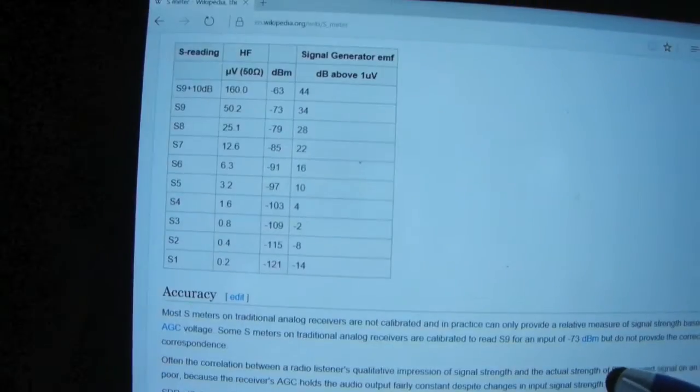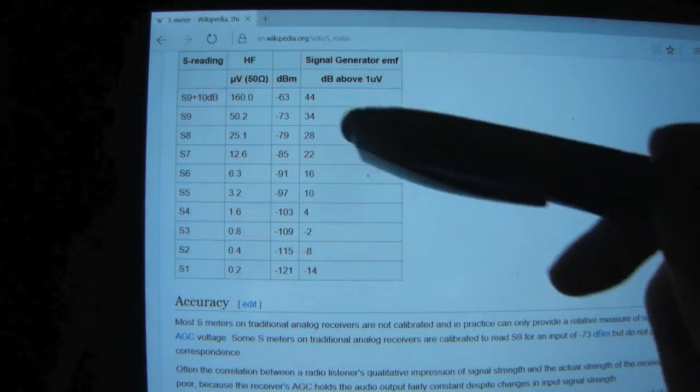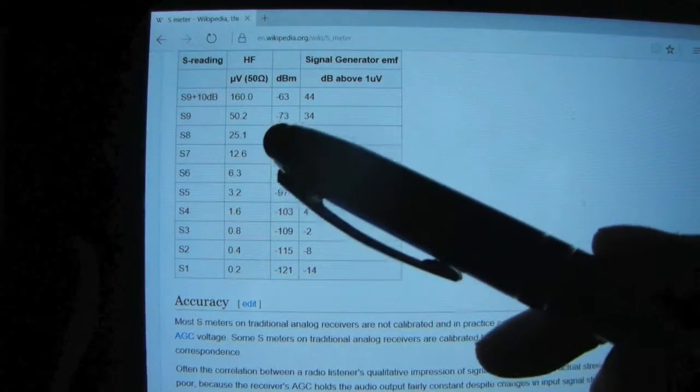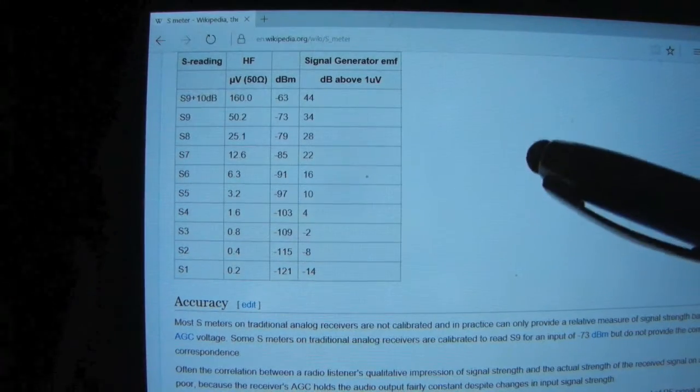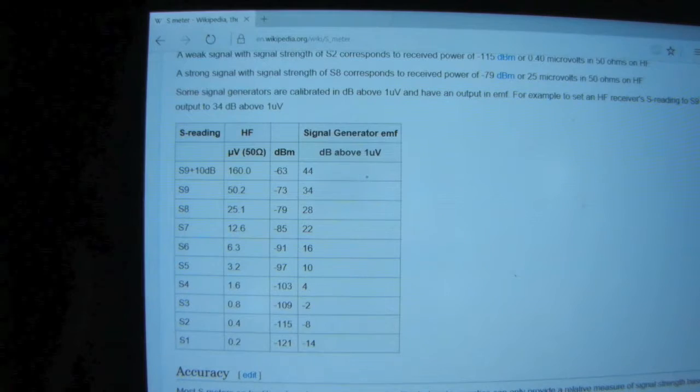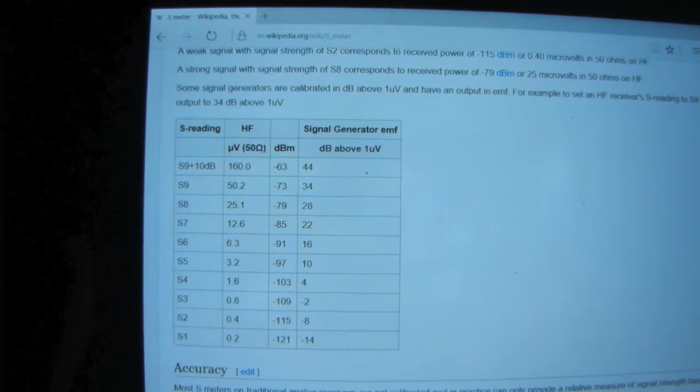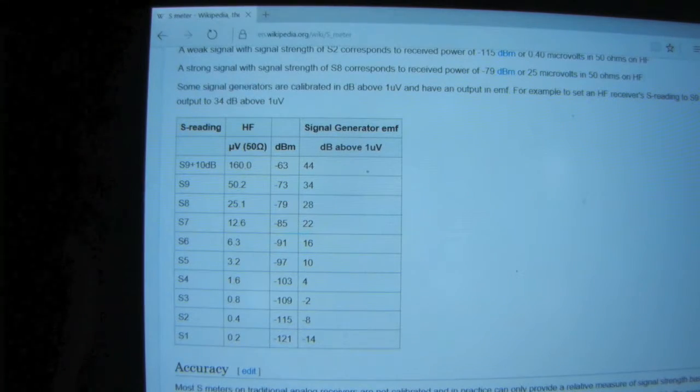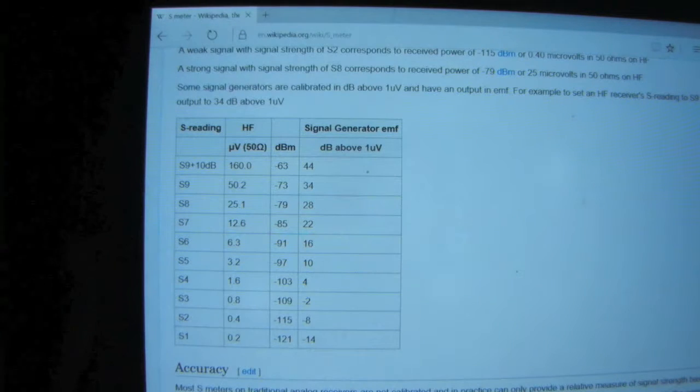And if we scroll down, you can find that Wikipedia has a nice chart of the microvolts, the power level, in relationship to the S-meter's reading, or what should be calibrated to. But in reality and in practice, most of these S-meters are going to be just relative to whatever the manufacturer decides to set. And it might not be representative of this table.